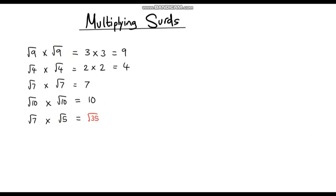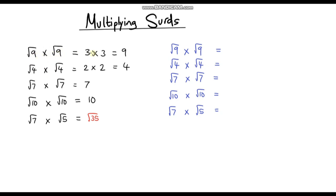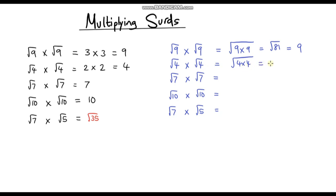To answer that, I'm going to go through each of these examples. With the first two examples, I took the square root first and then multiplied them together. But we could just change the order — I could multiply the two numbers first and then take the square root. So this is exactly the same as 9 times 9 and then taking the square root. So 9 times 9 is 81, so this is the square root of 81, and the square root of 81 is 9. All I've done is switched the order around. Similarly, the square root of 4 multiplied by the square root of 4 — we can just do 4 times 4 first and then take the square root. 4 times 4 is 16, so this is the square root of 16, which is 4.